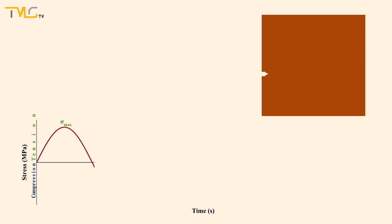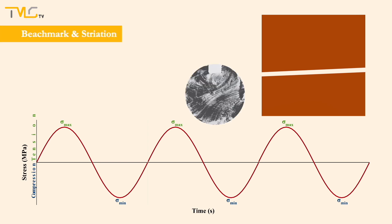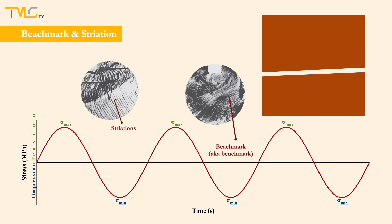Once formed, cracks progressively advance and grow under cyclic loading. Two types of markings can be seen at the fractured surface of the fatigue failed material, namely, beachmark patterns and striations. Both these markings are seen as concentric ridges advancing from the origin of the crack through the cross-section of the material until fracture.